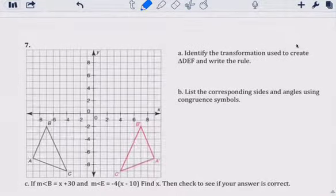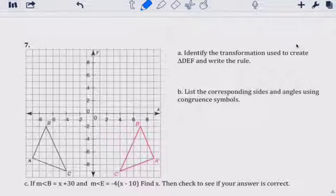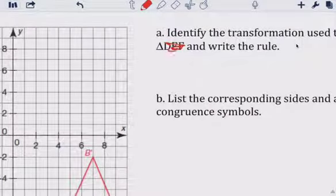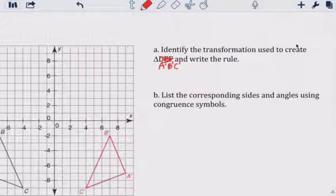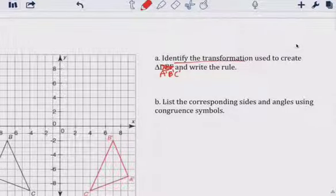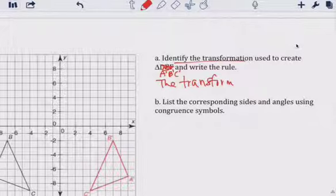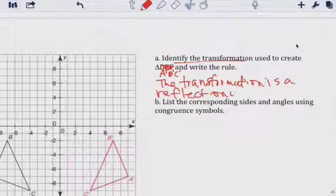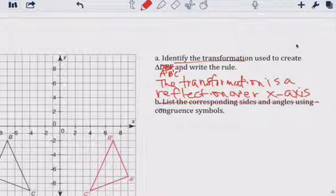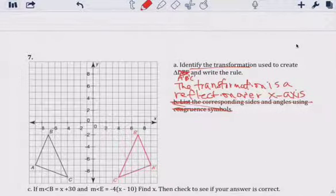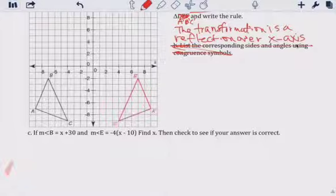Here, identify the transformation used to create A prime, B prime, C prime, triangle A prime. It's a reflection. Identify the transformation. The transformation is reflection. Transformation is a reflection over the x-axis. We already know how to do that. That's just asking you to do, I'm not going to do it.